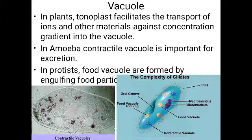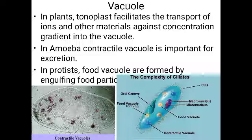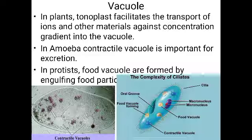The tonoplast in plants helps in the transport of ions and other materials against the concentration gradient into the vacuole. Against the concentration gradient means substances move from a region of low concentration to high concentration. The concentration of substances is normally higher in the vacuole than in the cell cytoplasm.